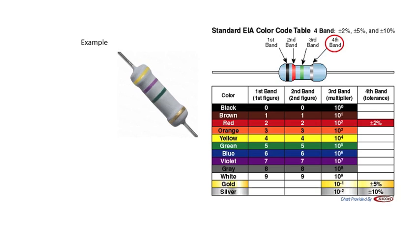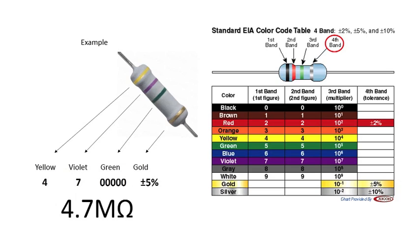Let's work backwards. We have a yellow, violet, green, and gold resistor, holding the gold band on the right. We take each color. The first band, yellow, represents a four. The second band represents seven. The third band represents five zeros, and then plus or minus five percent, for a 4.7 megaohm resistor.